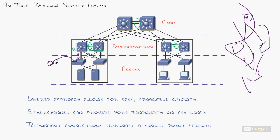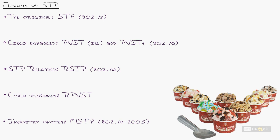Now let's look at the different flavors of spanning tree. The original is 802.1D — it's phenomenal and still the default on many switches out of the box. It works exactly as it's supposed to. The problem is it's slow — without proprietary tuning, you're looking at 30 to 60 seconds of convergence time.